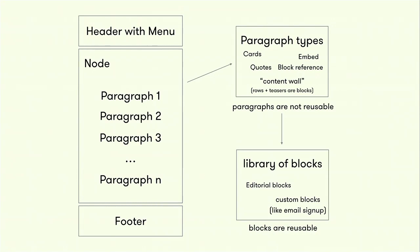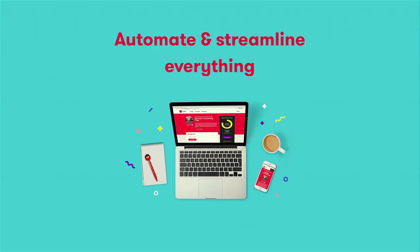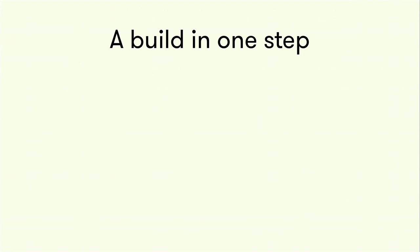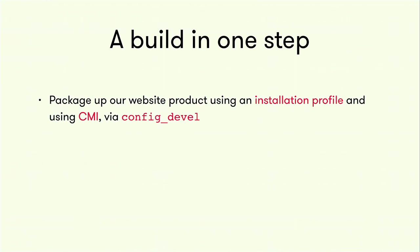The second part, which I think is very important when you build a product, is you need to focus on automating and streamlining everything. You need to make your build in one step — it's part of Joel Spolsky's original test for building good software systems. We package up our websites and components using an installation profile, basically building a distribution. We use the fantastic CMI in Drupal 8, and we slice up our config manually with ConfigDevel, so we know exactly what goes where and don't have a monolithic block of configuration.